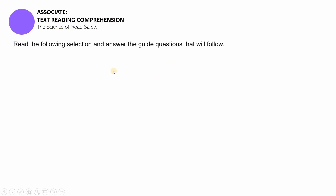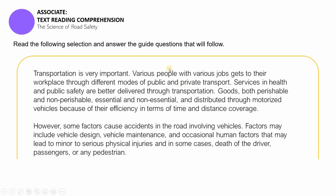Okay, now let's begin. For Associate Text Reading Comprehension — the science of road safety — you're going to read the following selection and then answer the guide questions that will follow. For the purpose of this video lesson, I will be reading along with you. Transportation is very important. Various people with various jobs get to their workplaces through different modes of public and private transport. Services in health and public safety are better delivered through transportation. Goods, both perishable and non-perishable, essential and non-essential, are distributed through motorized vehicles because of their efficiency in terms of time and distance coverage. However, some factors cause accidents on the road involving vehicles.